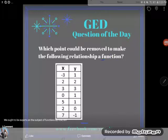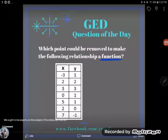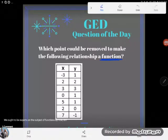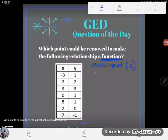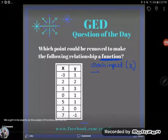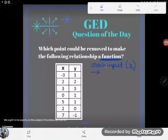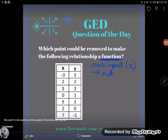Now remember that a function is a relationship where each input value, usually our input values are our X's, is mapped to one and only one output value. So each input has only one output, one Y.